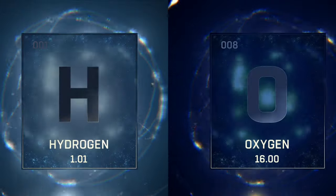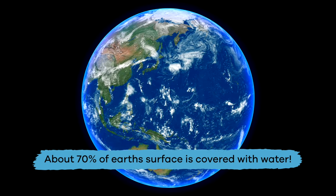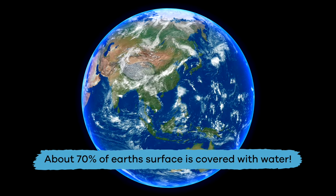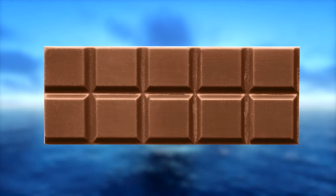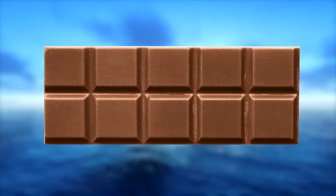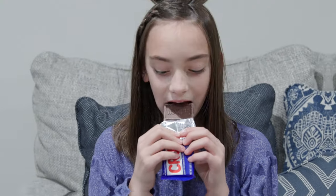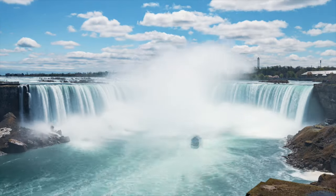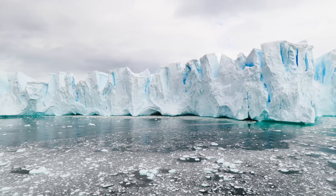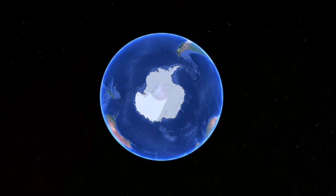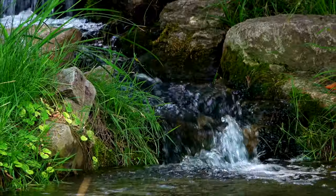We've talked about what water is, but what about where we can find it? About 70% of Earth's surface is covered with water. That seems like a lot — let's say you had a candy bar with 10 squares of chocolate; 70% would equal 7 whole squares. Most of Earth's water comes from its oceans, but it's also found in glaciers, the polar ice caps, rivers, lakes, streams, creeks, and reservoirs.